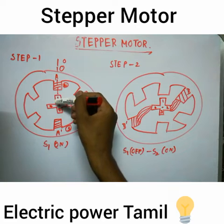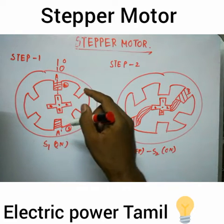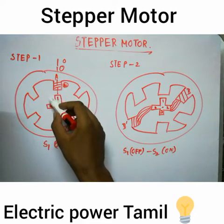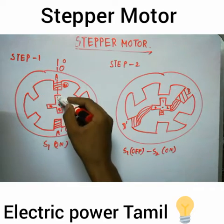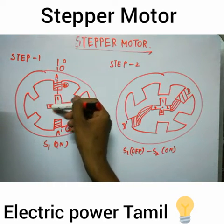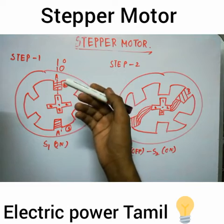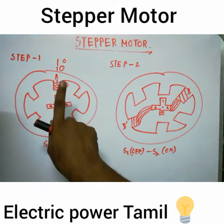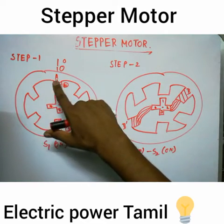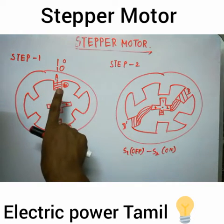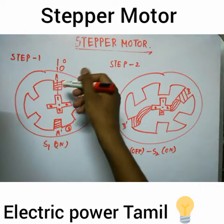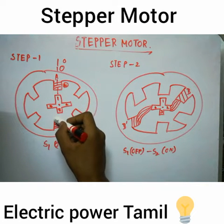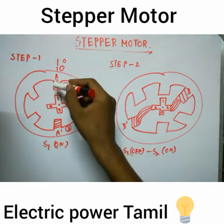With A phase energized, the north pole is formed. There are four slots on the rotor, and one slot will align. The rotor teeth — one, two, three, four — are already positioned. When A phase is energized and aligned, this side is north, the other side is south, and the rotor is at 0 degrees.